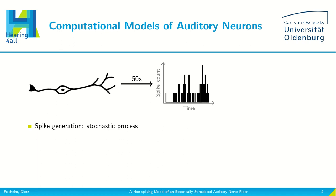Therefore, experiments are normally repeated many times, and then spike histograms showing the spike count over time can be obtained.